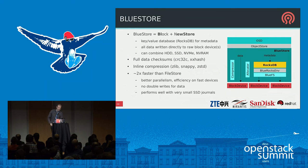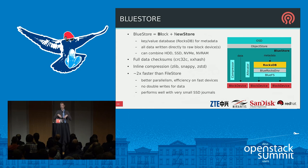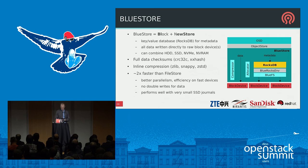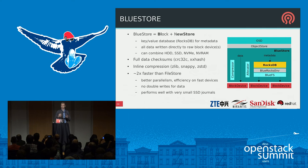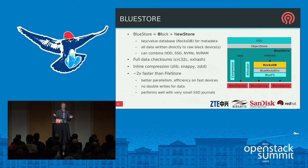The big headline feature in Kraken is BlueStore. Currently, OSDs use FileStore to write data to local disk as files on XFS. BlueStore cuts out that entire layer and writes data directly to a block device, using RocksDB for metadata while data goes straight to disk. BlueStore can combine hard disks, SSDs, and even NVDIMMs or persistent memory for journaling. Key headline features include full data checksums across everything written to disk — whenever we read something we always verify the checksum — and inline compression driven by policy.